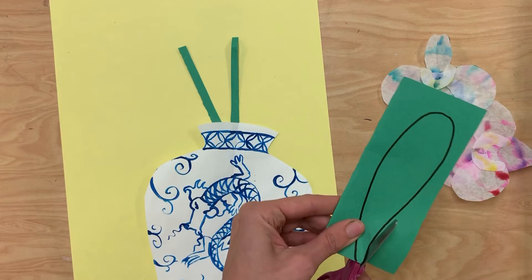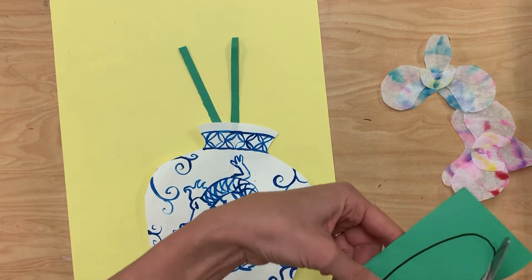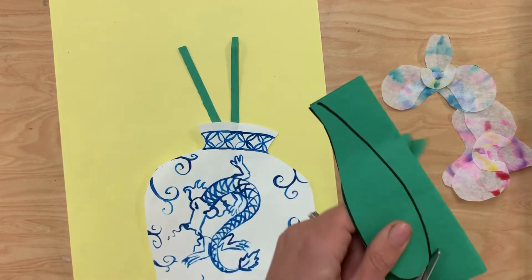Then you can cut along this line while it's folded so that you create two identical pieces. So I'm going to go ahead and cut those out.